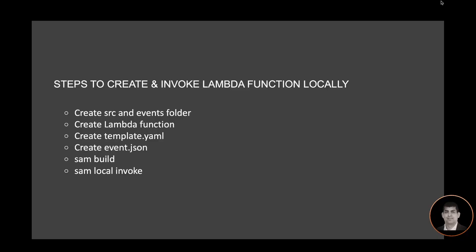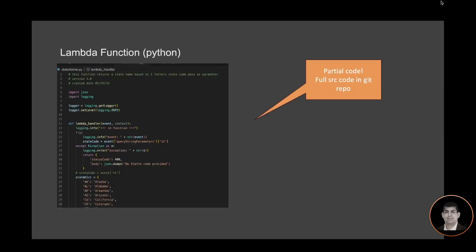Now that we've completed a sample SAM application using VS Code and AWS Toolkit, let's look at another example where we create a template.yaml from scratch. We will create a source and event folder, create a Lambda function, create a template.yaml, and create an event.json for sample payload. We will then use the 'sam build' command and 'sam local invoke' to invoke the function. Here is the Lambda function — it's written in Python. You can use any language of your choice supported by AWS Lambda.